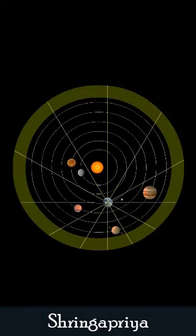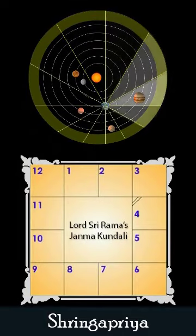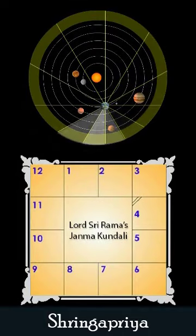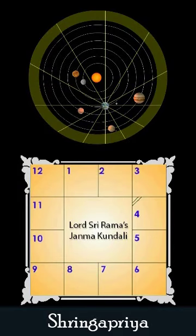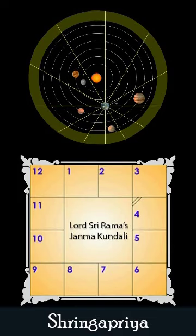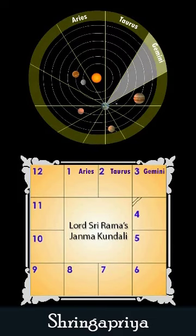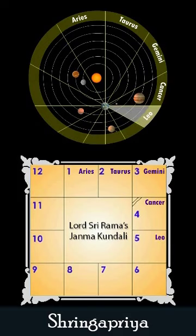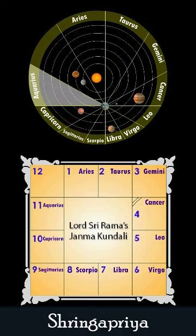Now let us name and simplify this to understand the position of the planets in the 12 squared box. The 12 parts of the celestial sphere are Aries, Taurus, Gemini, Cancer, Leo, Virgo, Libra, Scorpio, Sagittarius, Capricorn, Aquarius, and Pisces.